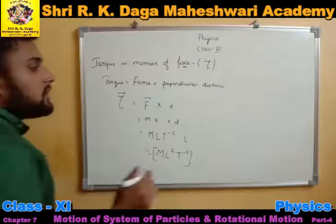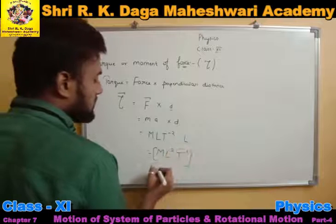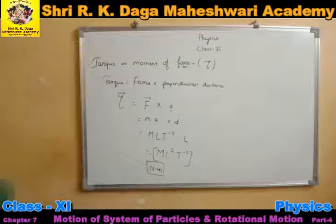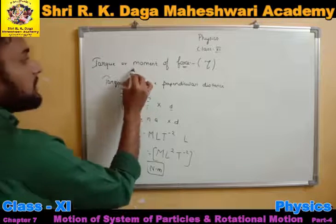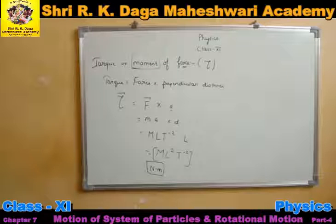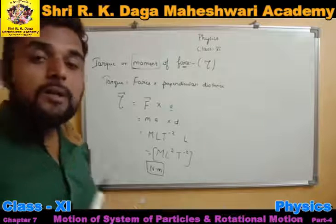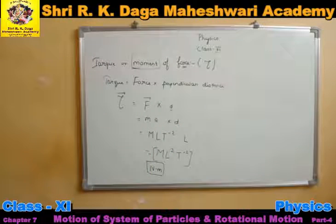If we talk about the unit of torque, the unit of force is Newton and the unit of distance is meter. So the unit of torque will be Newton meter. This is the unit of torque, or moment of force. When we talk about rotational motion, we use the term moment, and this will be the dimensional formula and unit of torque.